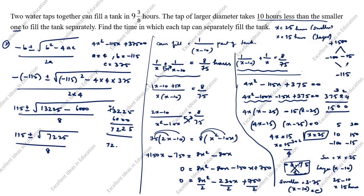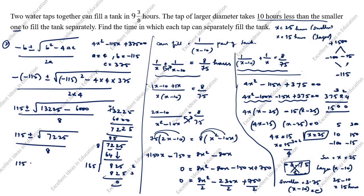We find √7225 using the long division method. Working through the steps: the square root of 7225 comes out to 85. We can verify: 85 × 85 = 7225. So x = (115 ± 85) / 8. Taking the plus sign: x = (115 + 85) / 8 = 200 / 8 = 25. Taking the minus sign: x = (115 minus 85) / 8 = 30 / 8 = 3.75.